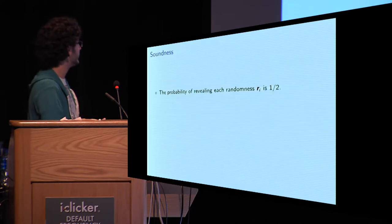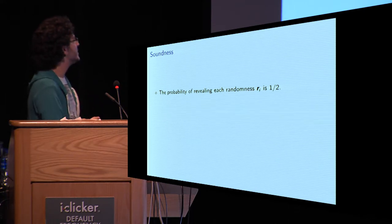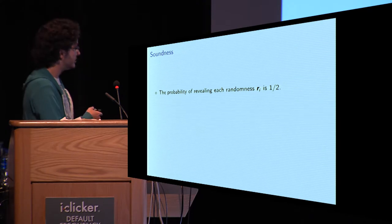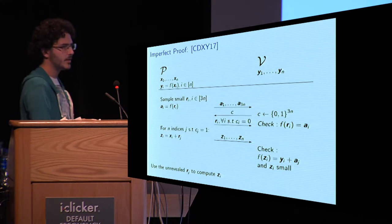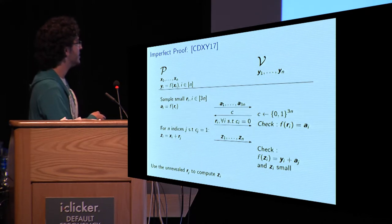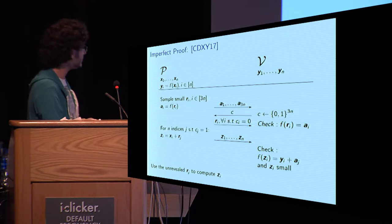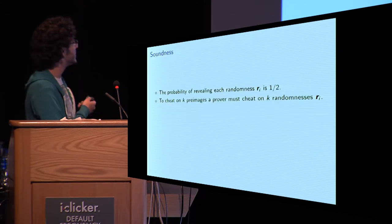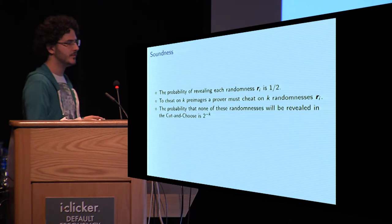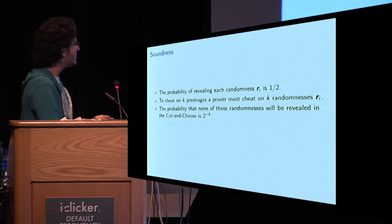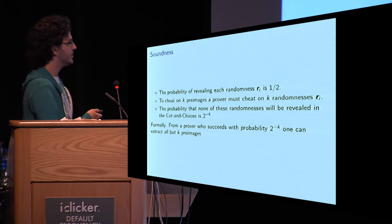So, this is the imperfect proof. Why does it have the soundness that I gave? Because the probability of revealing each randomness will be one half. Now, imagine the prover wants to cheat on k of these secrets. How does it do it? It will cheat on k of the randomnesses, hope the verifier does not ask to reveal them, and then use these randomnesses to cheat on the zi's. So, essentially, to cheat on k pre-images, it will have to cheat on k randomnesses, and the probability that none of these randomnesses will be revealed is 2 to the minus k. More formally, we can show that from a prover who succeeds with probability 2 to the minus k, one can extract all but k pre-images.